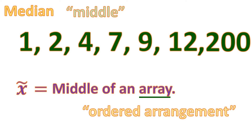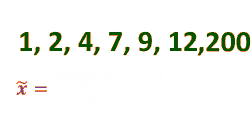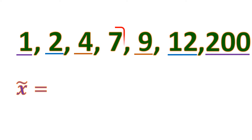Now let's find the median. So let's pair the numbers: we have 1 and 200, 2 and 12, 4 and 9 — and we have an exact middle, which is 7. So the median is equal to 7. That means that's the center of this set of data.